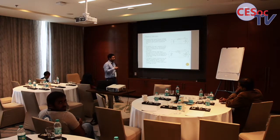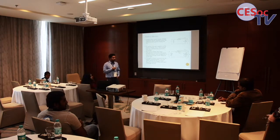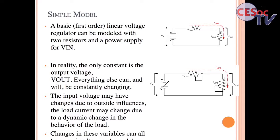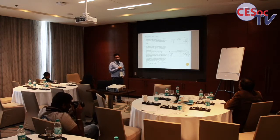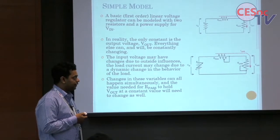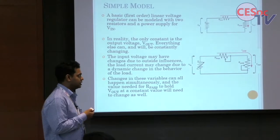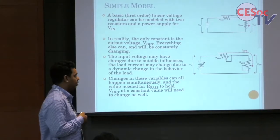This explains how an LDO works. The pass element resistance changes depending on changes in input voltage or load resistance. If input voltage changes, the pass element resistance changes such that voltage across R_load remains constant. Similarly, if load resistance changes due to different current requirements, R_pass changes to keep output voltage constant.